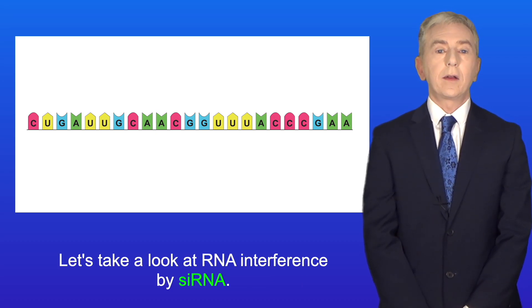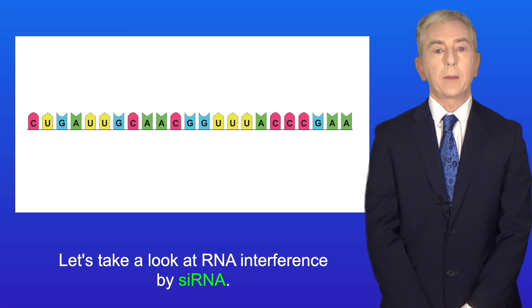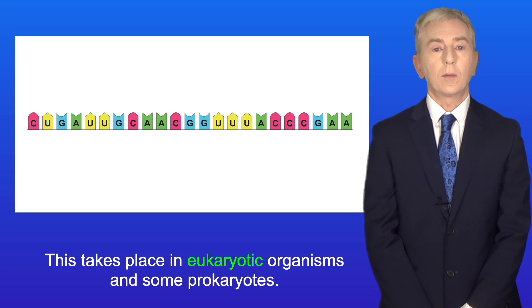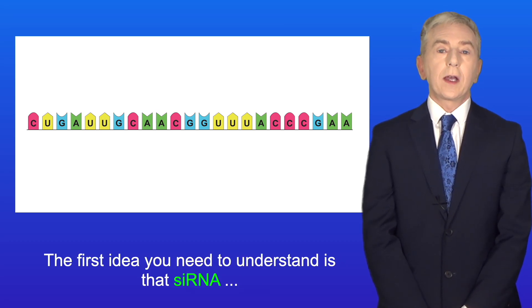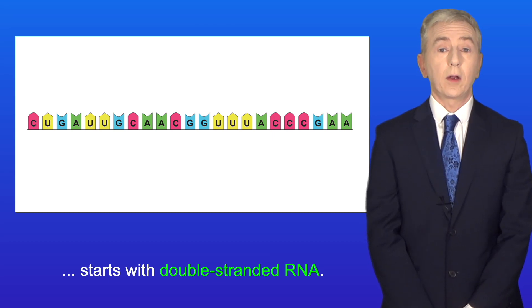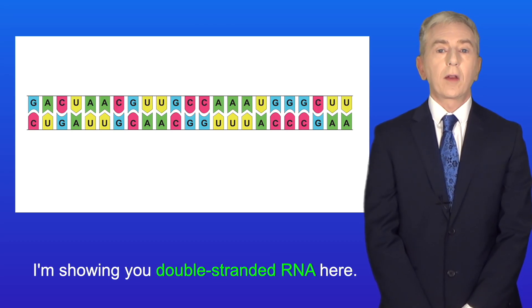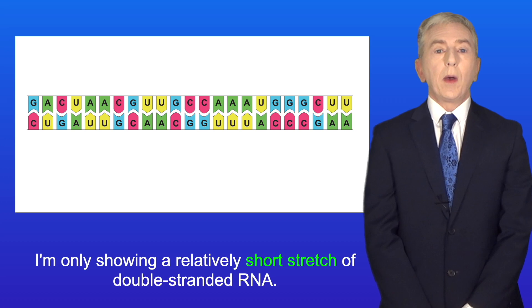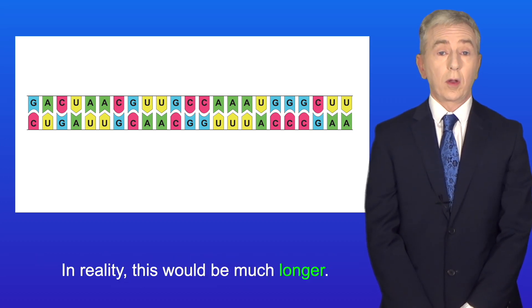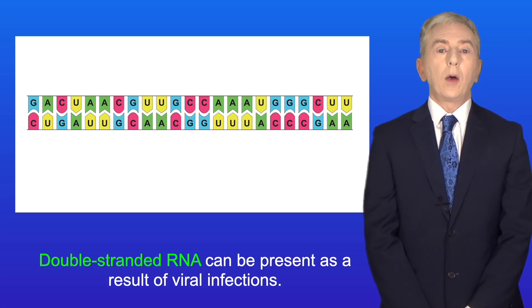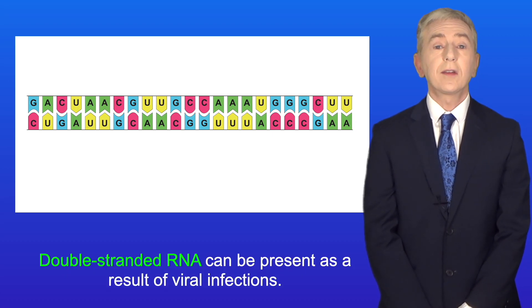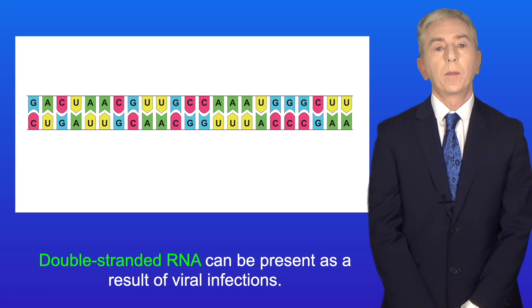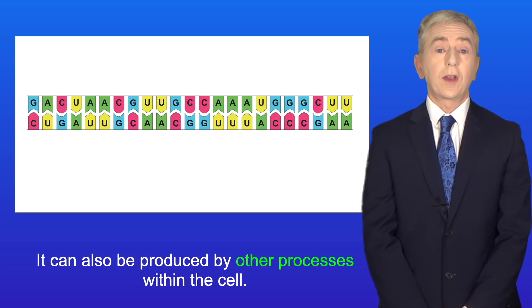So let's take a look at RNA interference by siRNA. This takes place in eukaryotic organisms, and some prokaryotes. Now, the first idea you need to understand is that siRNA starts with double-stranded RNA. And I'm showing you double-stranded RNA here. I'm only showing a relatively short stretch of double-stranded RNA. In reality, this would be much longer. Now, double-stranded RNA can be present as a result of viral infections. It can also be produced by other processes within the cell.